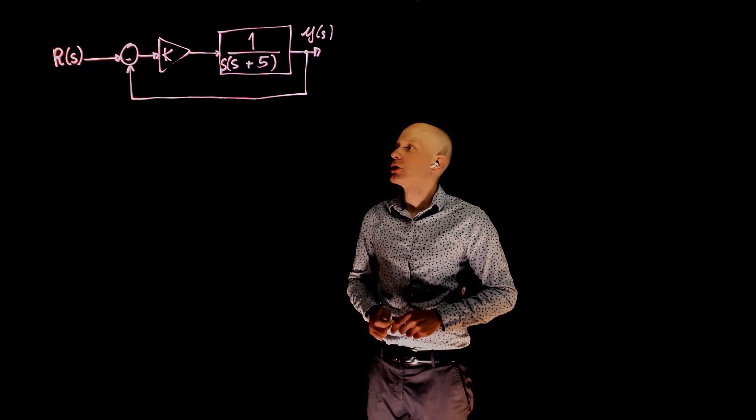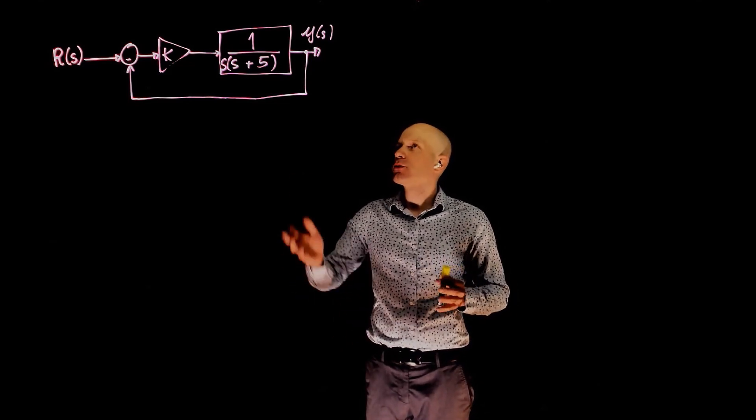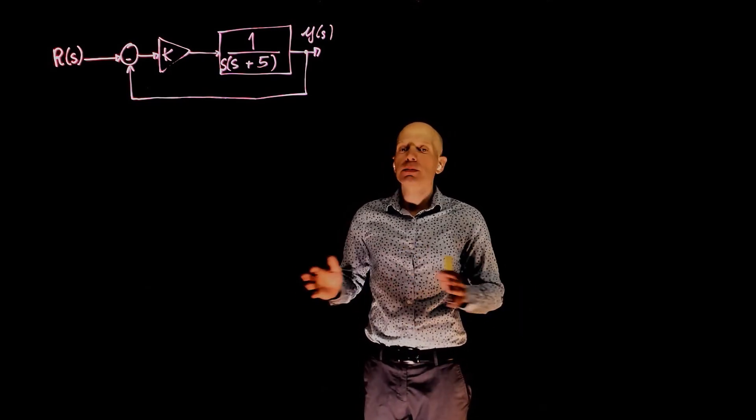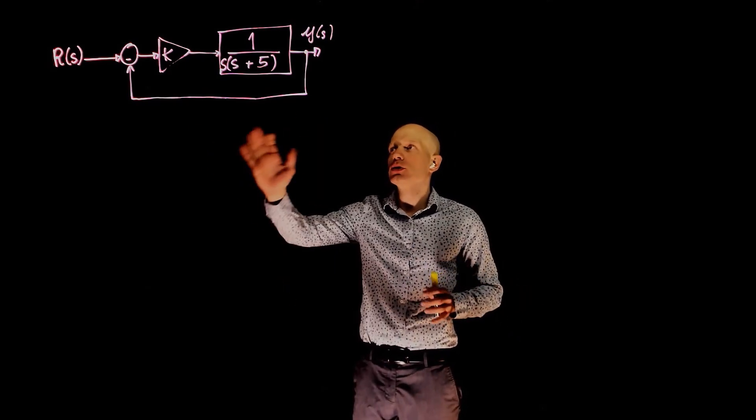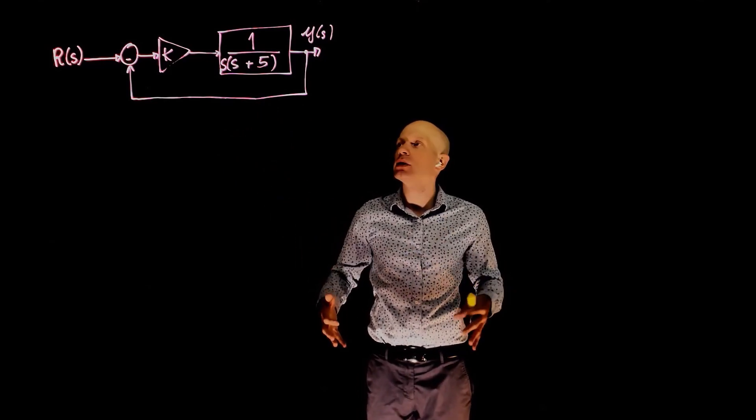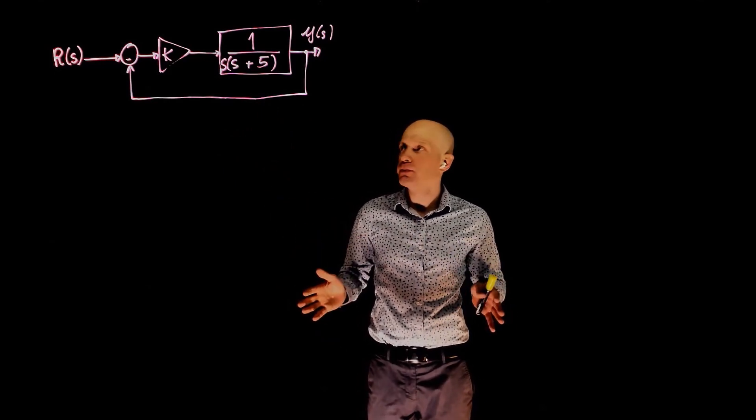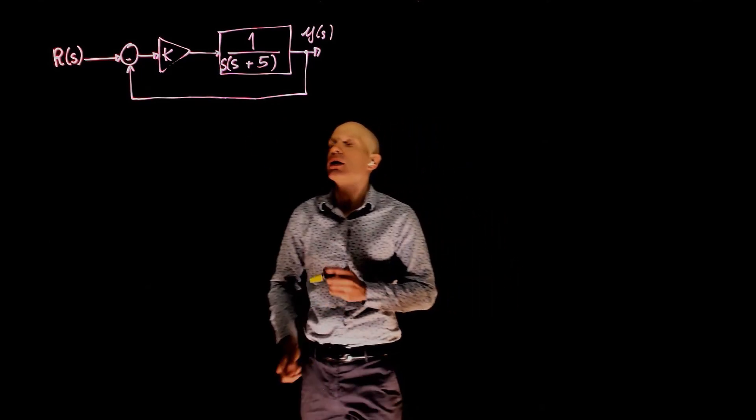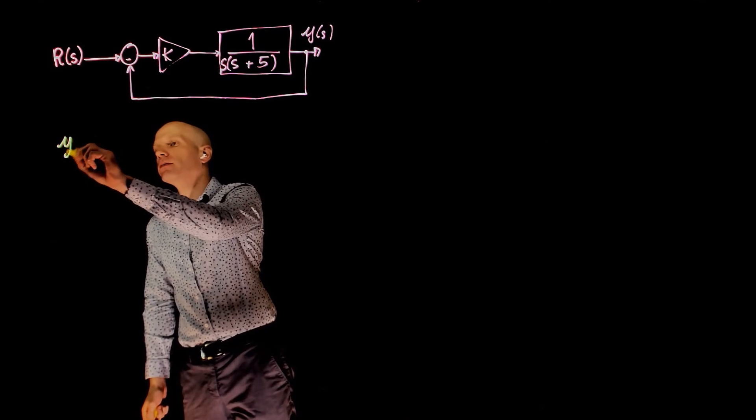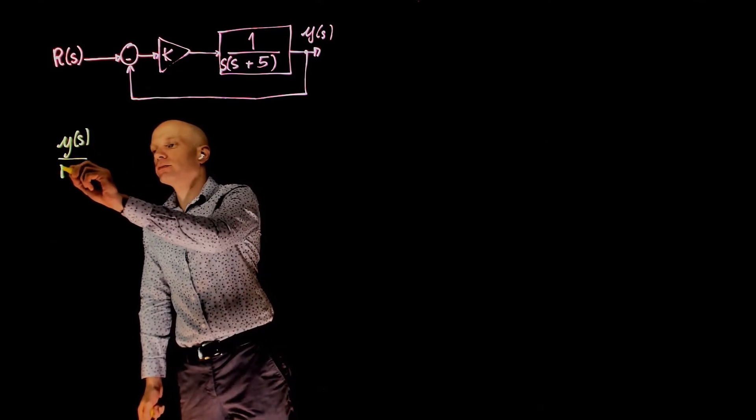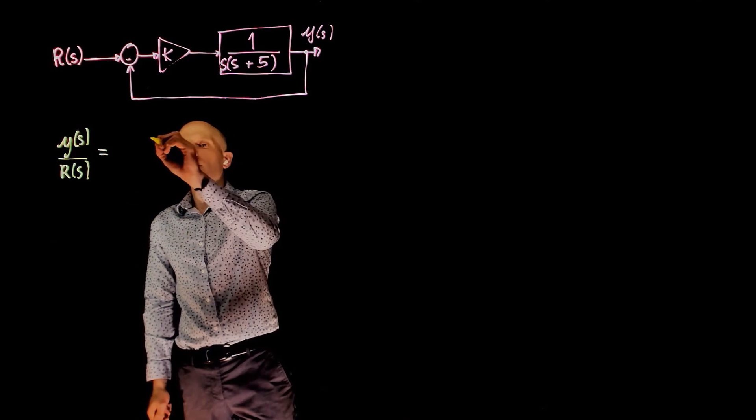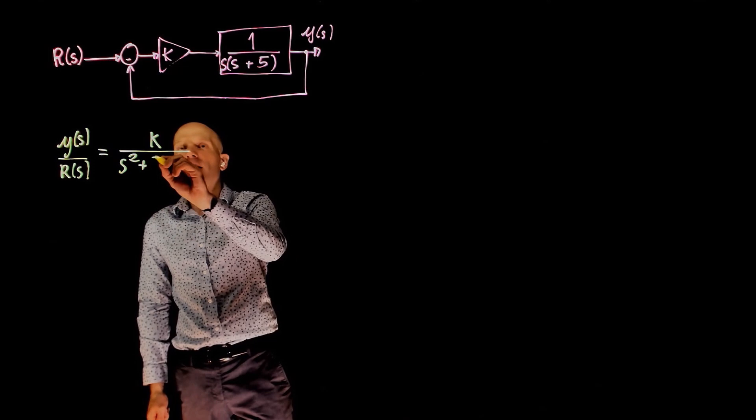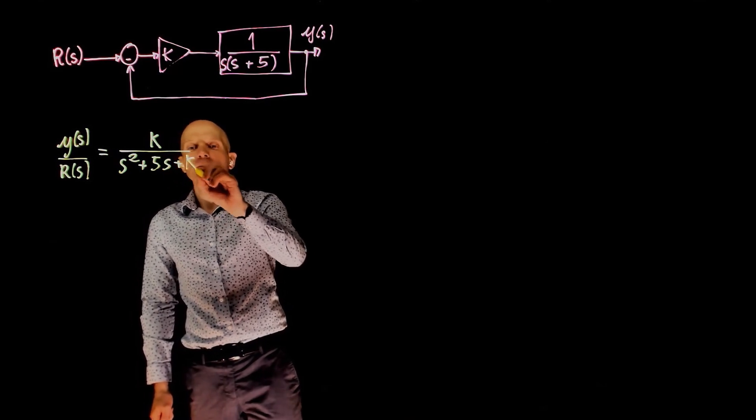Let's start with the first question. The first step is of course to find the transfer function y over R. From now on, I'm going to skip the derivation of how to find a closed loop transfer function, because at this point this operation must be trivial. By looking at this transfer function from the past examples, we should be able to tell that y over R is simply k over s squared plus 5s plus k.